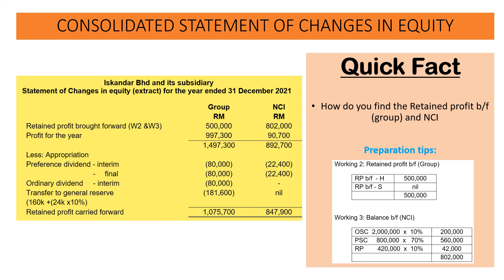The retained profit carried forward for the group will be 1,075,700 and for the NCI it will be 847,900.